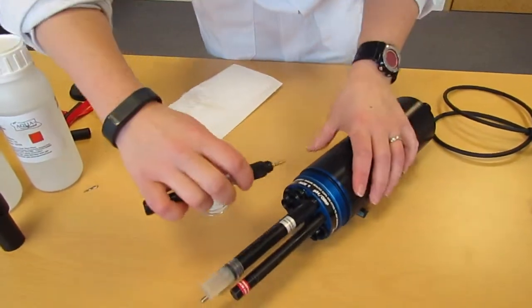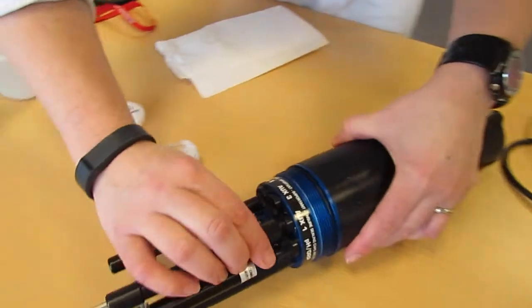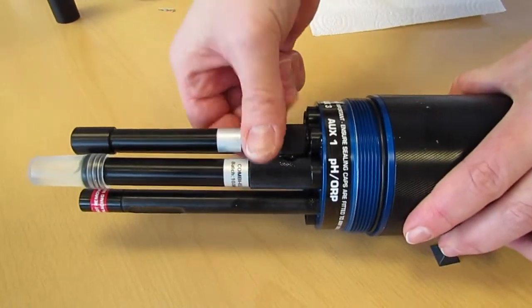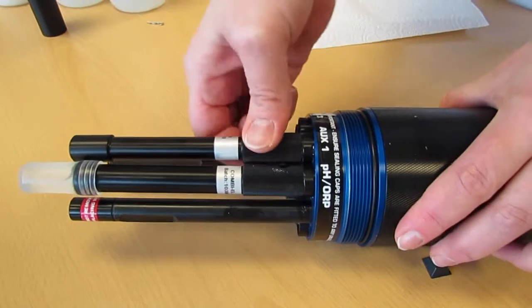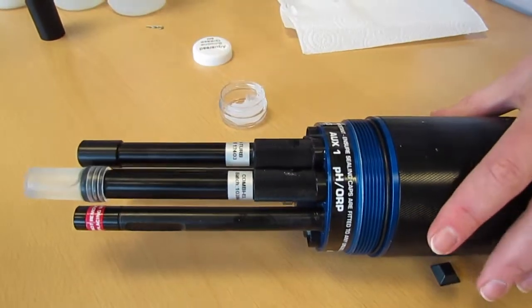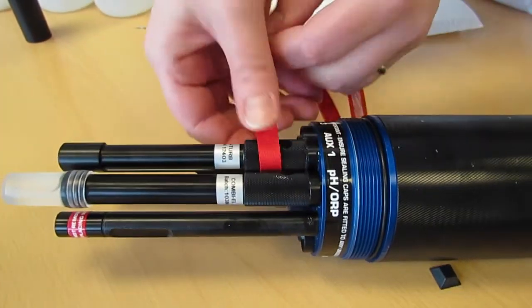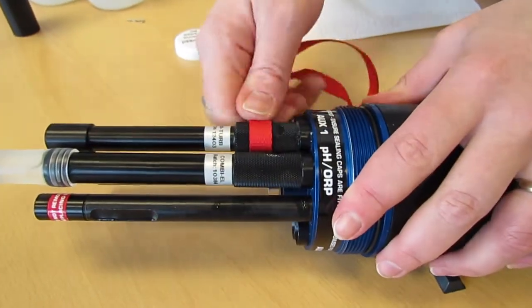This can then be installed into any of the AUX sockets. I'm going to install it into AUX1 on this occasion. This needs to be screwed in as hard as possible by hand, and then using the red lanyard as tight as you can get it.